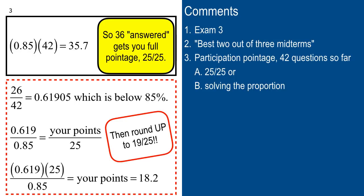Another thing I want to mention: exams don't get scaled down or anything. They just go straight into your pointage total. It's clicking and homework scores that get converted. At any point in the semester your homework is worth 15 points and your clicking is worth 25 points. Right now we have 42 clicker questions, but the pointage is always based on 25 for participation and 15 for homework.